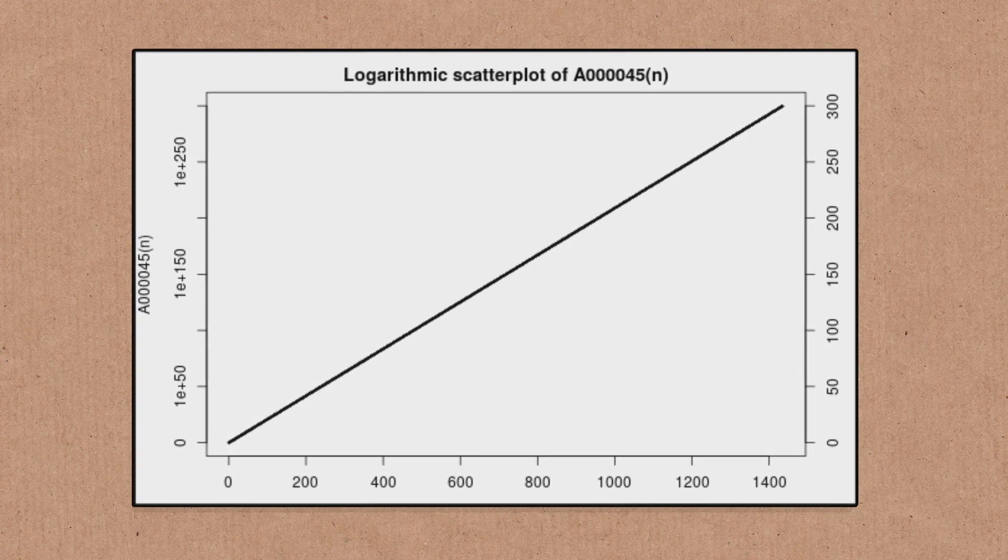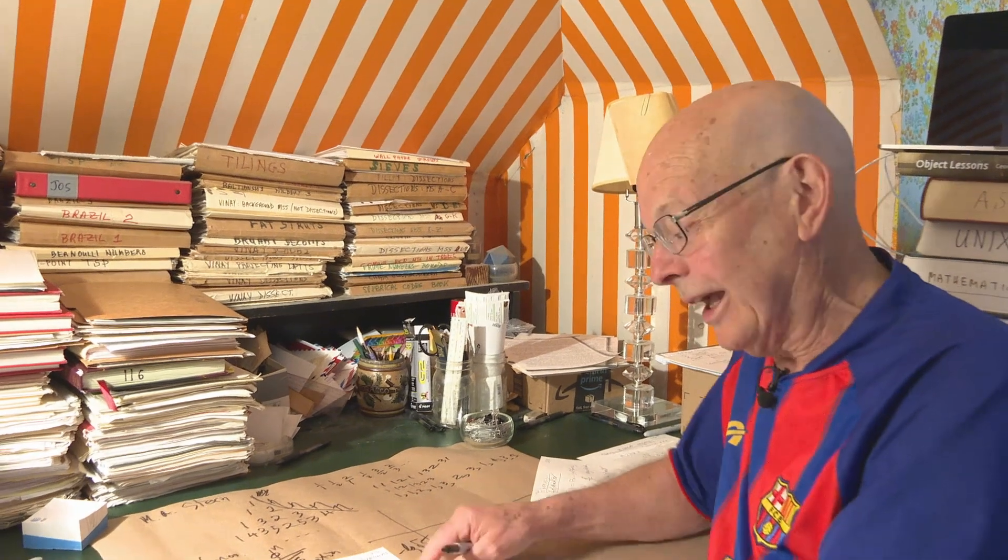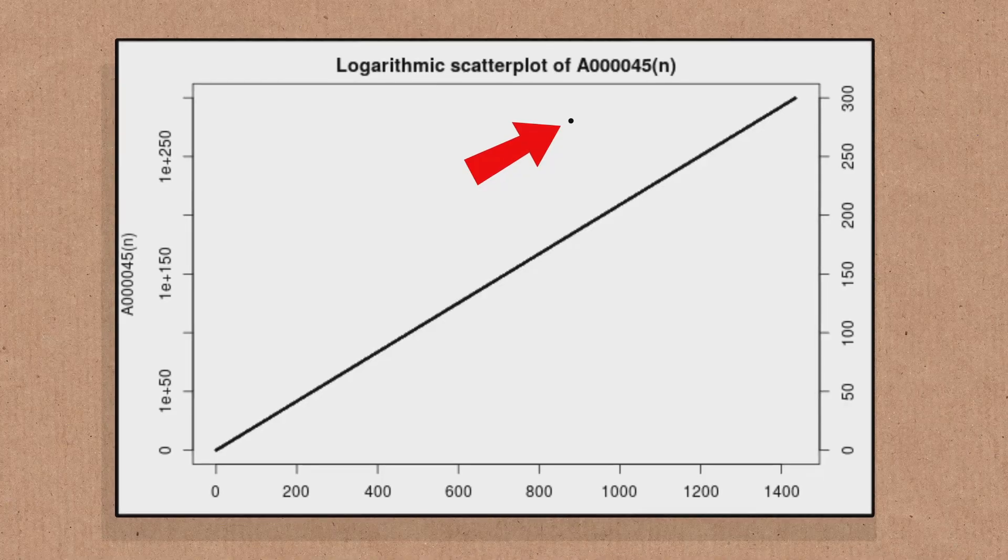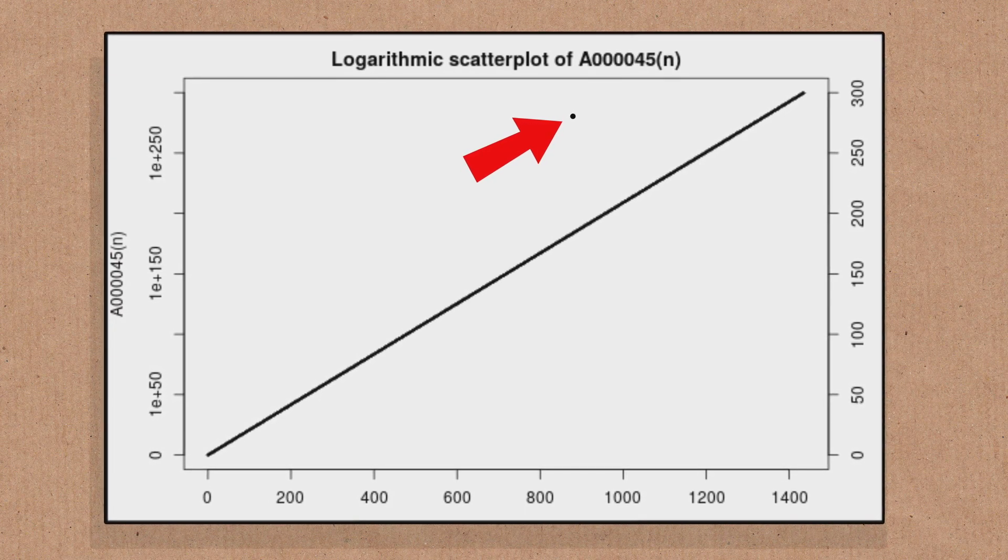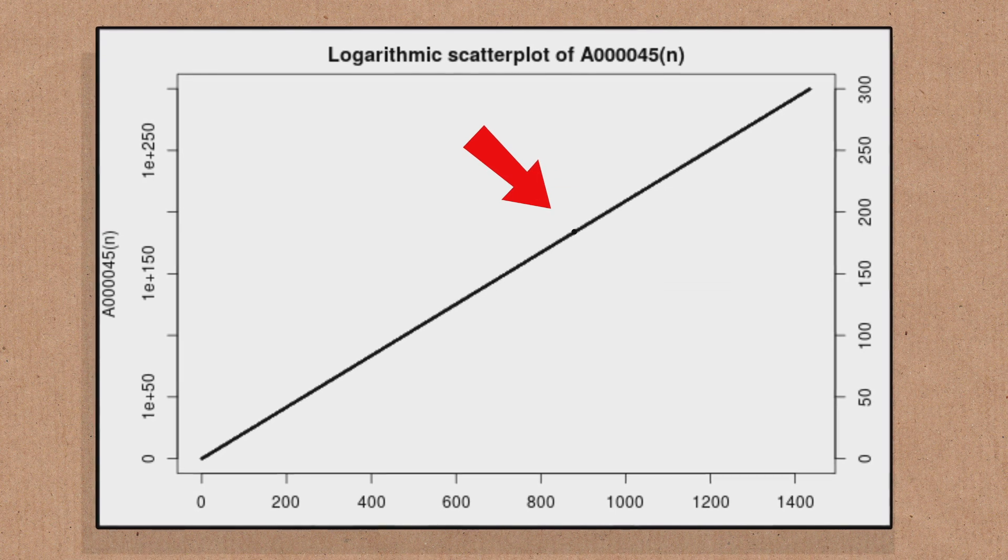The first time I did this, I tested the plot on this sequence, and it was a dead straight line except for one dot that was way off the line. And that's because there was a mistake in one of the large Fibonacci numbers, which I corrected. So that's boring.